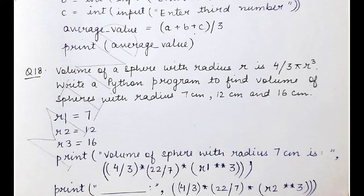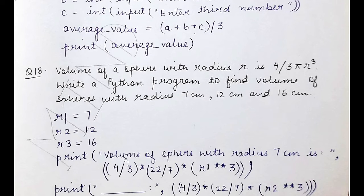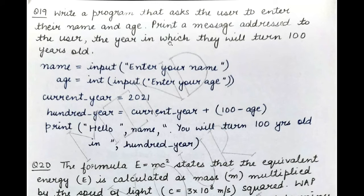I have used three variables to store the three radius values and three print statements to print the volume of each sphere. In each print statement I applied the formula (4/3) in brackets to enforce precedence, multiplied by 22/7 as the value of pi, and multiplied by r1 ** 3 — the exponentiation operator — for r cubed. Similarly for r2 and r3.